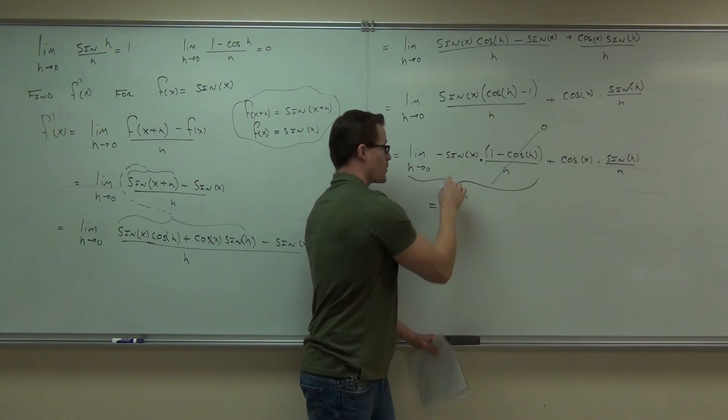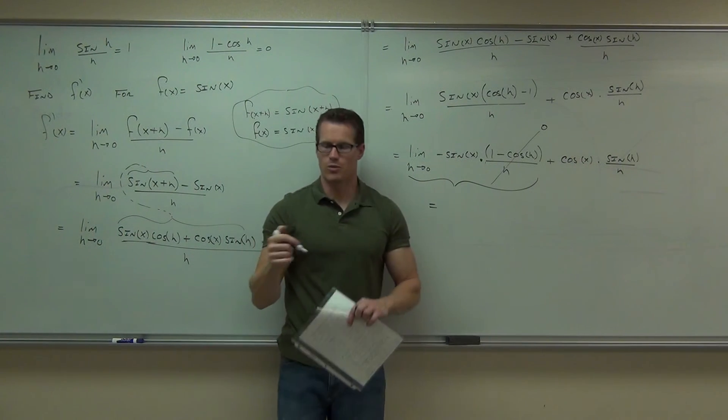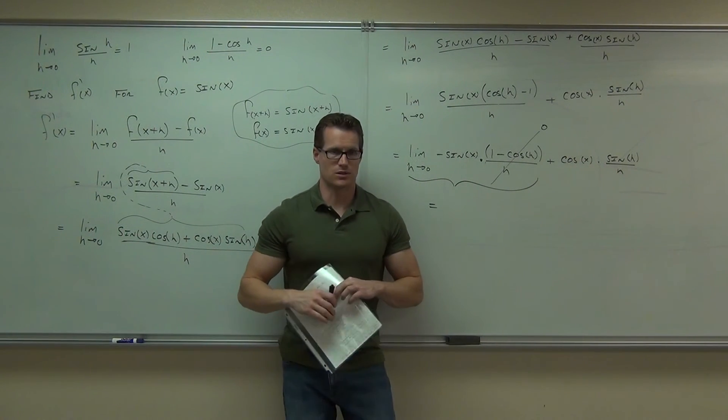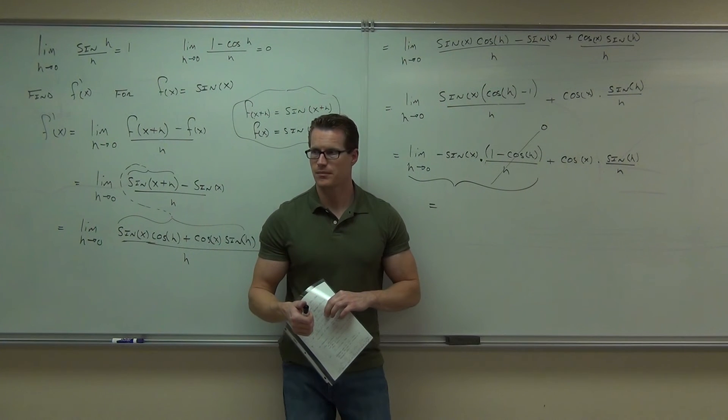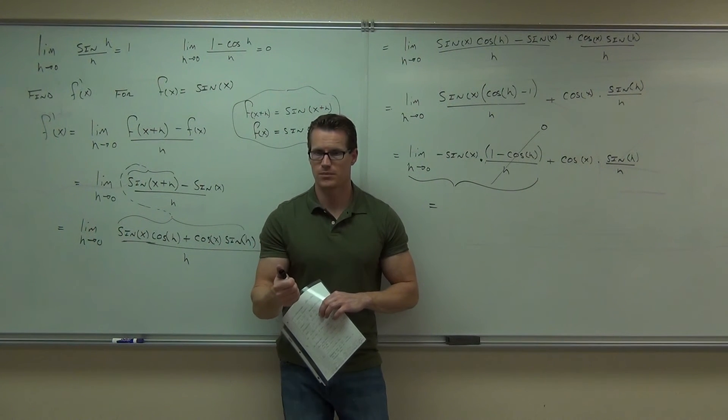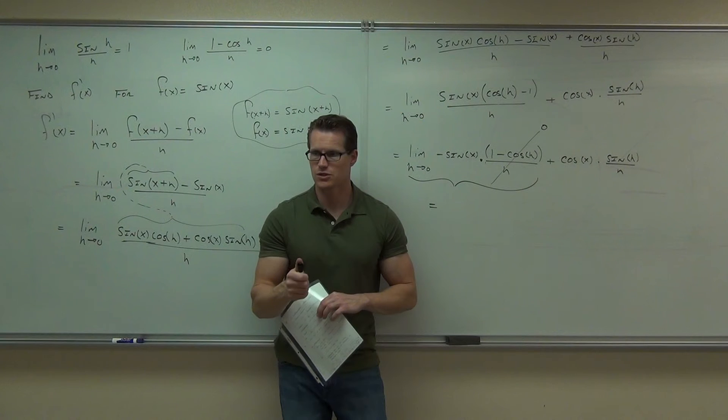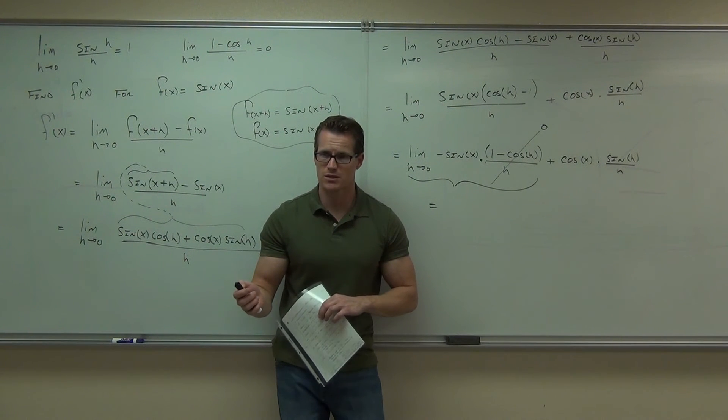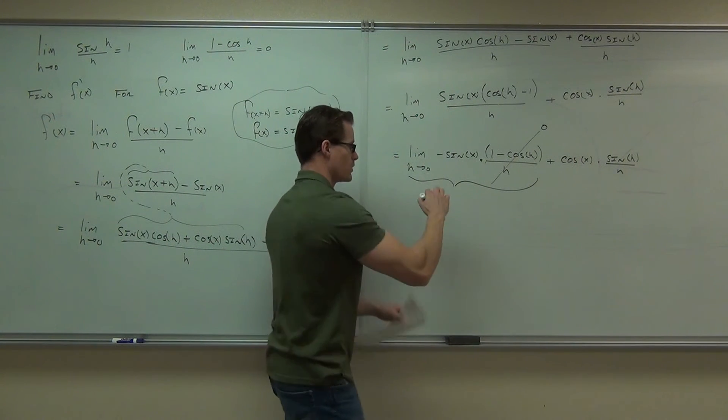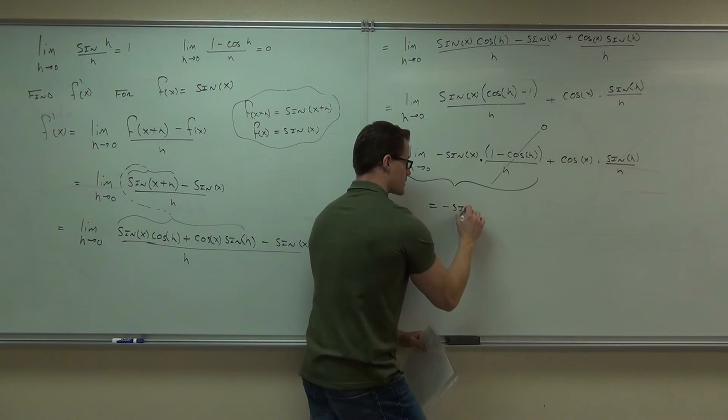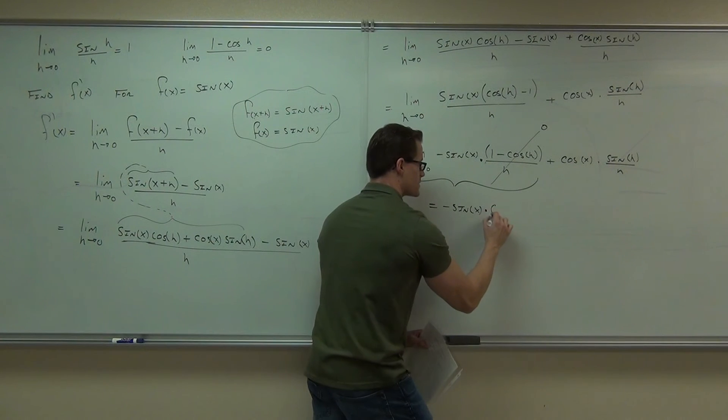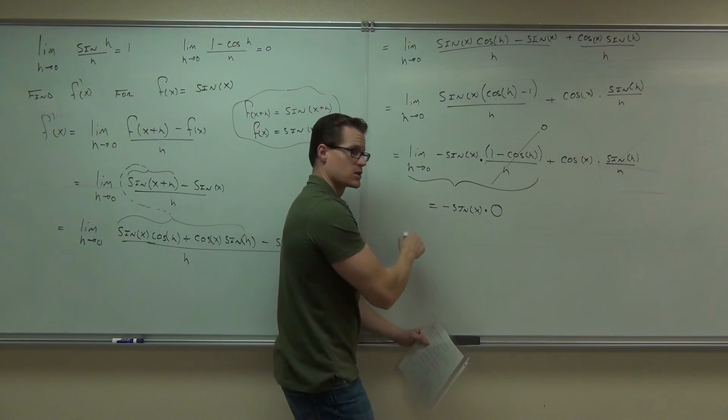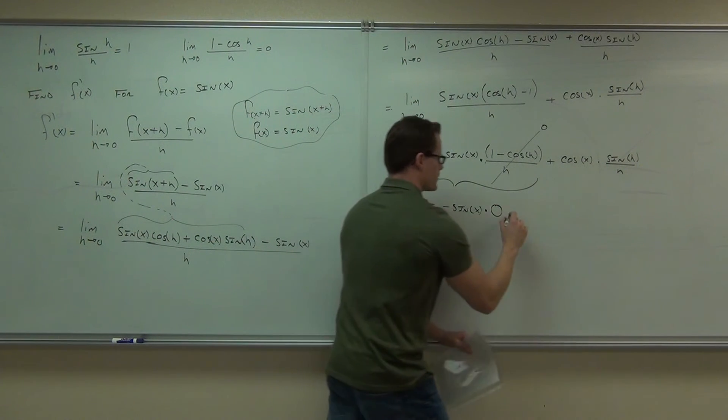What is going to zero? The h or the x? The h. The h is going to zero. Not the x. The h. So the x's stay the same, just like you do with your derivatives. You remember doing your derivatives with limits? Your x's stay the same. So this would be negative sine x times zero. That's going to give you zero. Zero. Plus.